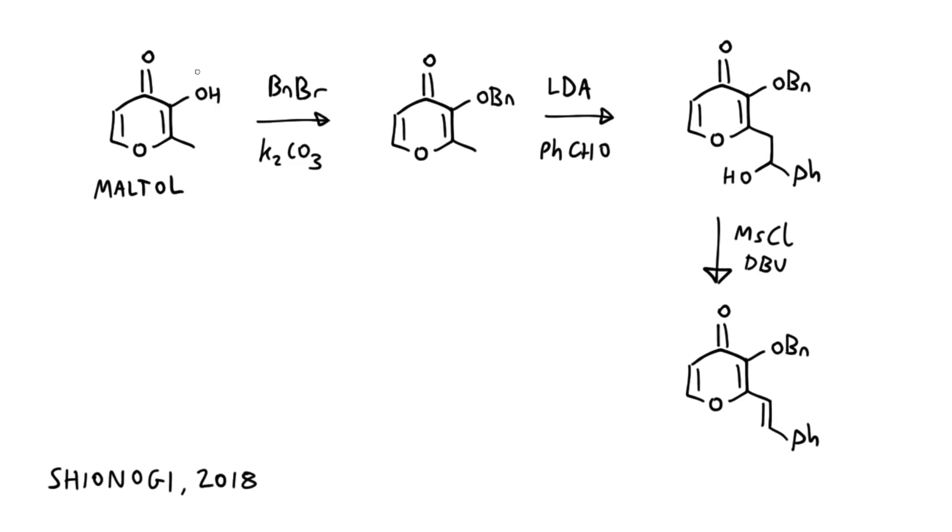On to the forward synthesis now. The first step is protection of the free hydroxy group as the benzyl ether. This ring system is a 4-pyrone, and while you might think it's aromatic because it has six electrons, the aromaticity is actually very weak. The behavior is better described as a diene or like a pair of alpha-beta unsaturated ketones. Treatment with LDA enables deprotonation of the exocyclic methyl group and formation of an extended enolate, and the extended enolate can pick up benzaldehyde to form this product.